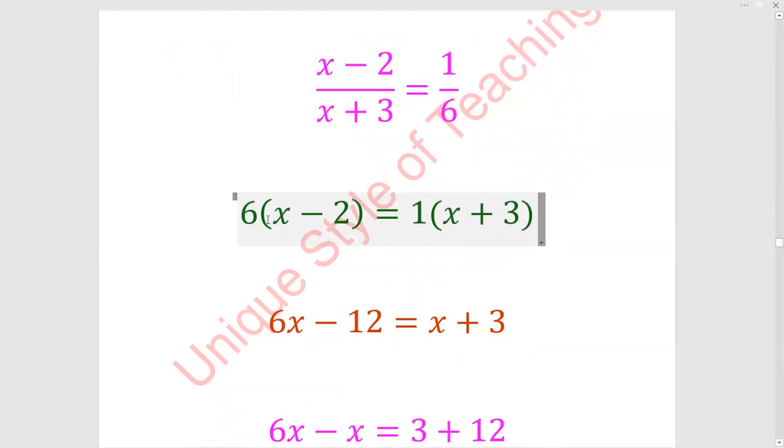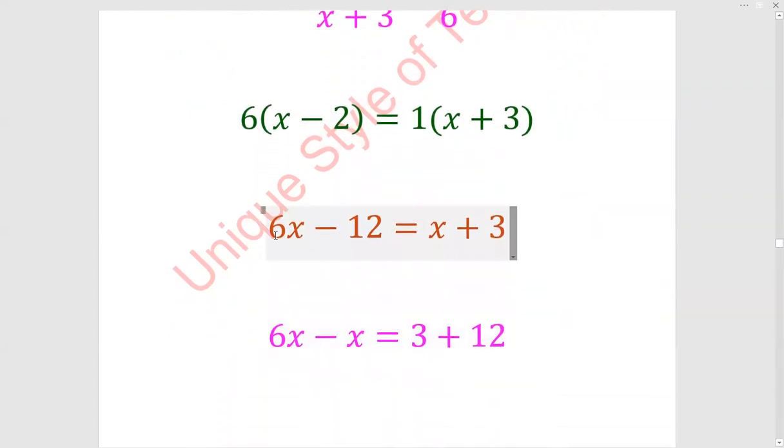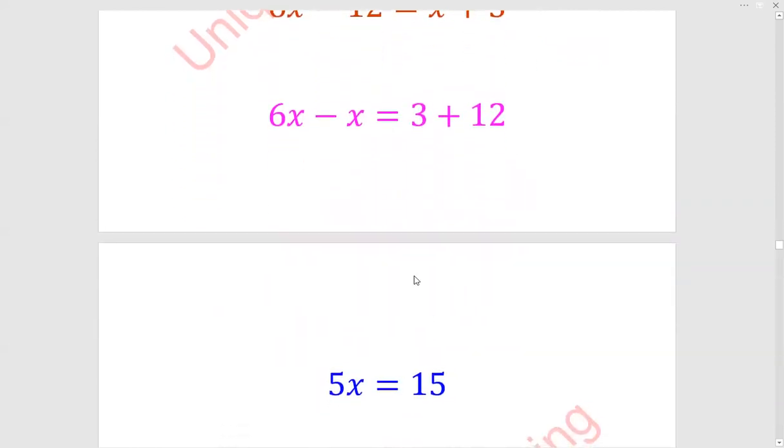Then we have 6x minus 12 equals x plus 3. When we shift x to the other side it will subtract, and minus 12 when shifted to the other side will be plus. It will be 5x, six minus one is five, three plus twelve gives fifteen. So 5x is equal to 15.